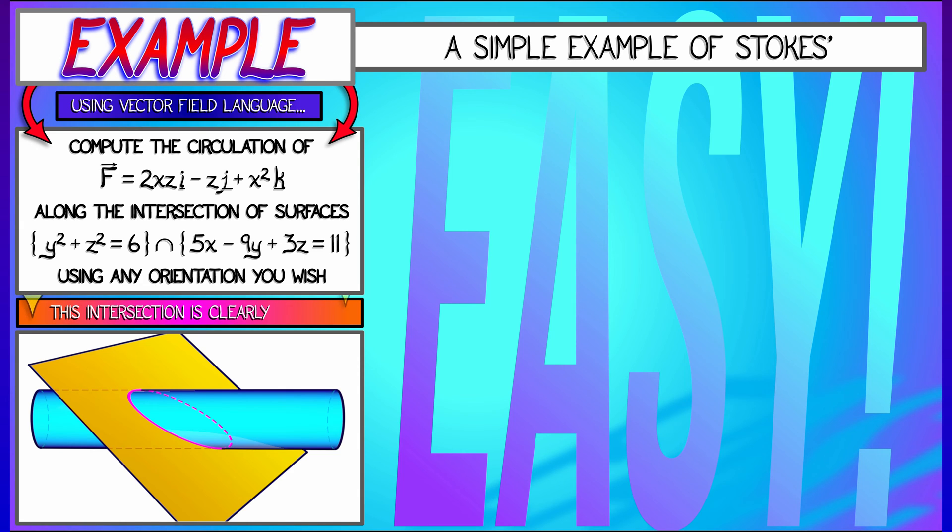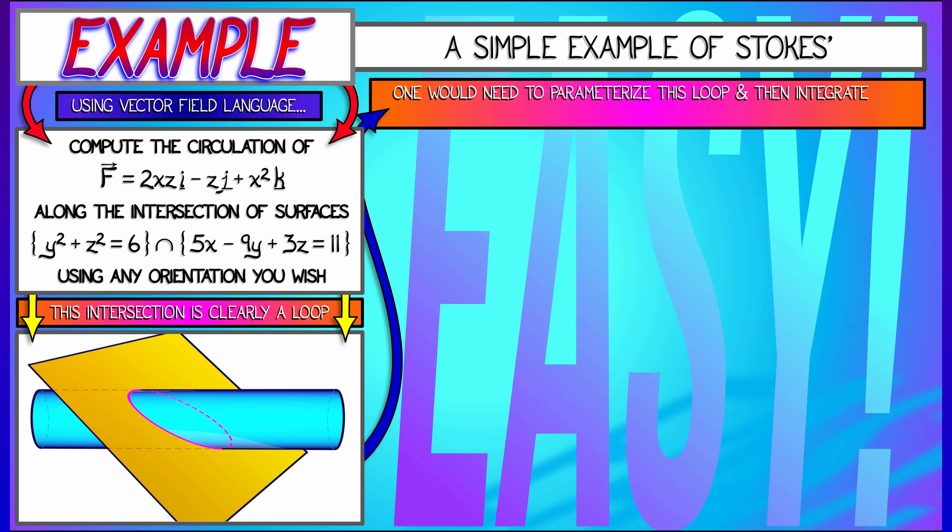These two are going to intersect in a loop, I think it's going to be an ellipse. And I don't know exactly what the equation for that would be, I would have to parametrize that loop somehow. And then I would have to convert this vector field to the work 1-form and integrate that along that parametrized loop. That's not impossible, but it would not be fun. You'd have a lot of sines and cosines, and look at that vector field, that would be some work.